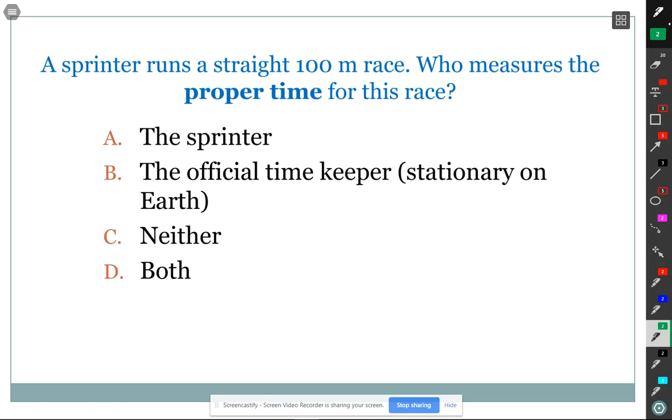This question should look somewhat similar. A sprinter, let's say it's Usain Bolt, runs a straight 100-meter race. Who measures the proper time for this race? Usain Bolt does. You guys were right on top of that. Why are you correct? The timer is at rest and it's at both the beginning and end. The clock is stationary throughout and the starting and ending points are the same place. So is the sprinter's personal stopwatch going to measure a longer or shorter time than the official time? Should the sprinter then be upset?